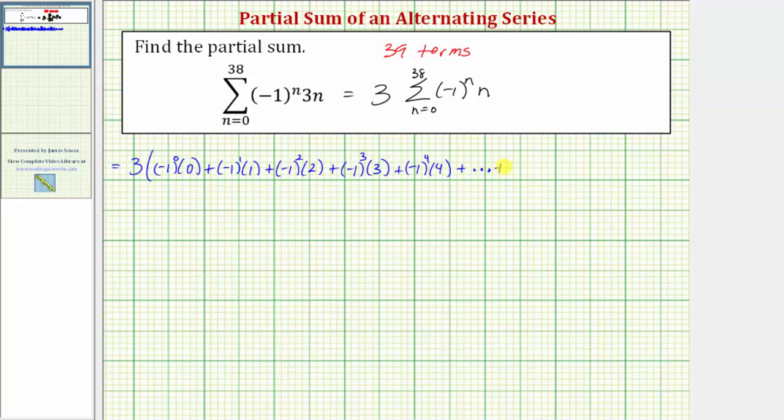Let's go ahead and find the last two terms of the series. When n equals 37, n equals 38. So when n is 37 we have negative one to the 37th power times 37, plus when n is 38 we have negative one to the 38th power times 38.